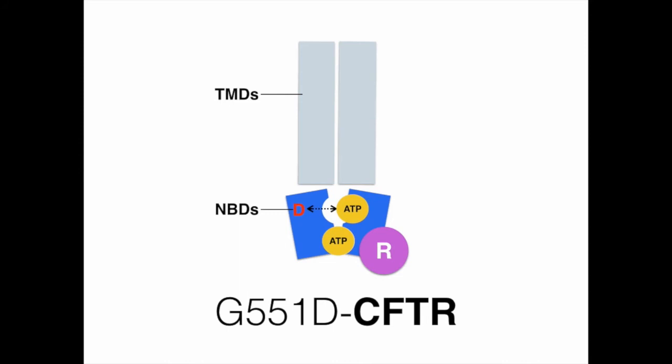Our previous study has shown that converting the conserved glycine at position 551 to aspartate causes gating defect, because the mutation introduced a negatively charged side chain at a critical position, so that NBD dimerization is prevented due to an electrostatic repulsion between the side chain of aspartate and the negatively charged gamma phosphate in ATP.